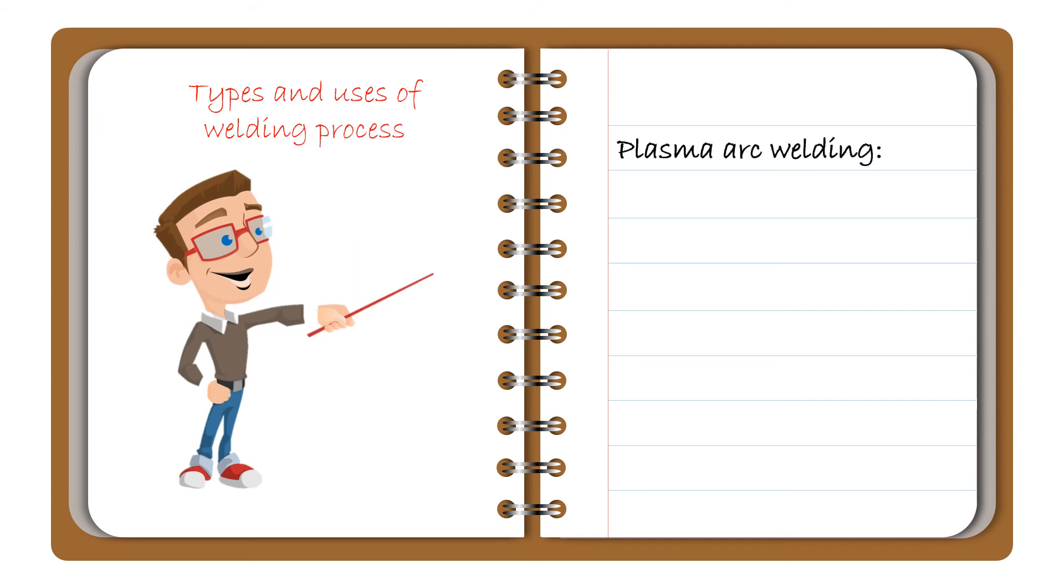Fifth one is plasma arc welding. The arc has a very deep penetrating ability into the metals welded, and also the fusion is taking place in a very narrow zone of the joint.